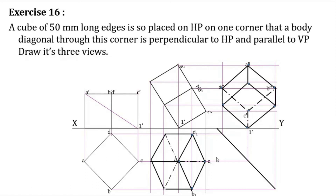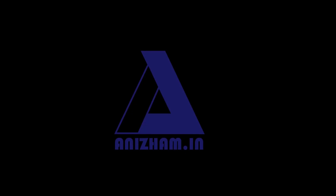Notice the similarity between this figure and the previous one. In the previous case — the cube where the solid diagonal was parallel to HP and perpendicular to VP — the side view in that case was our top view here, and the top view was our front view. So the views essentially swap between the two cases.